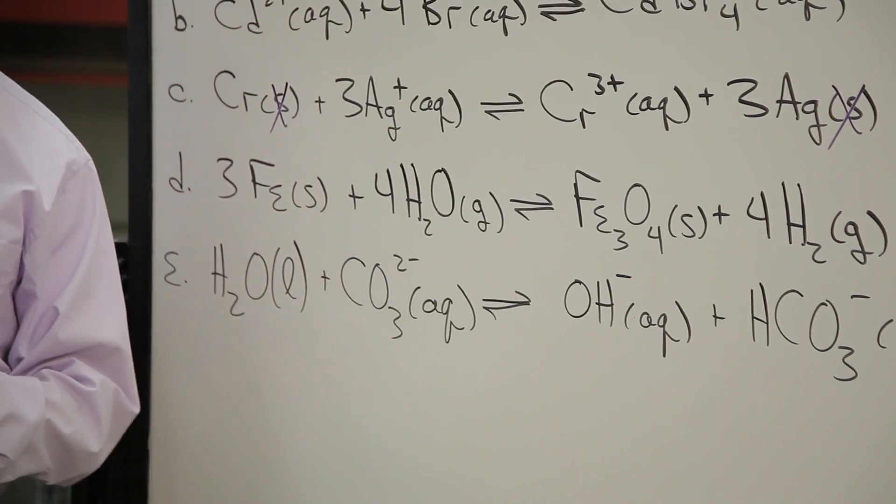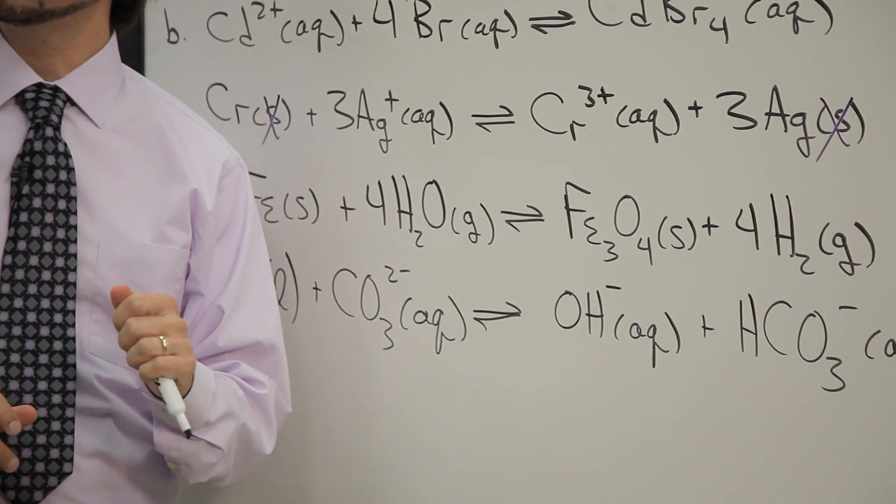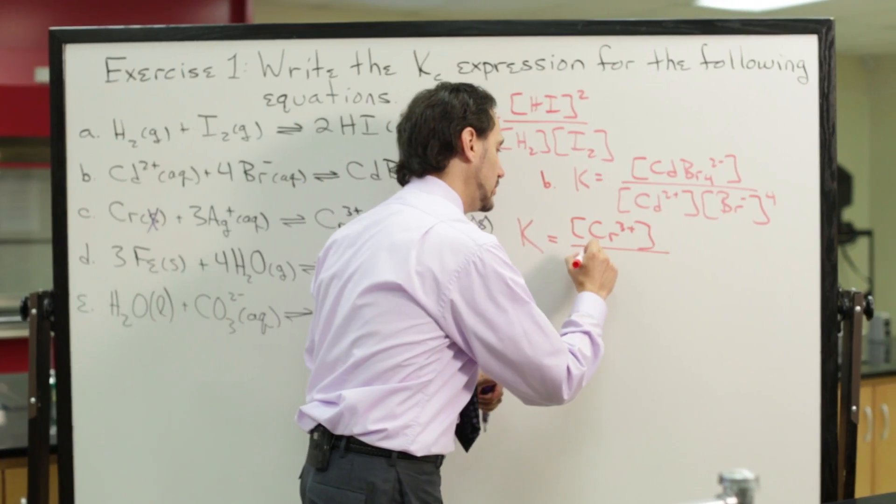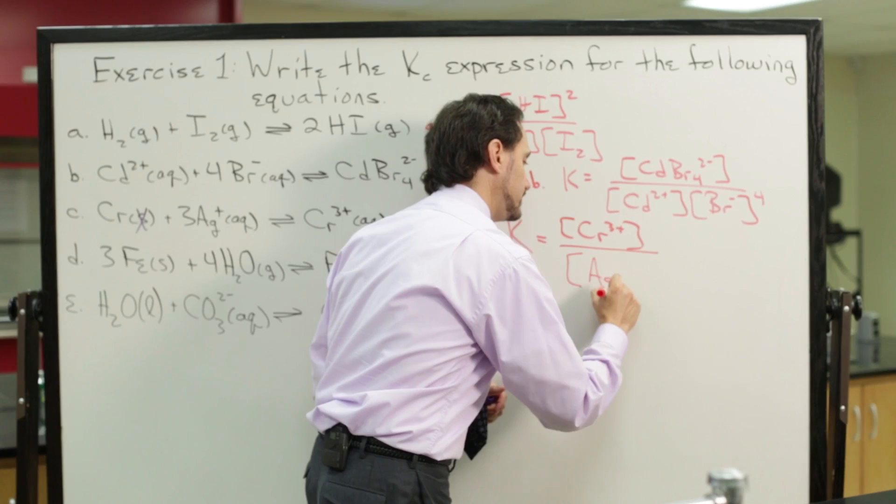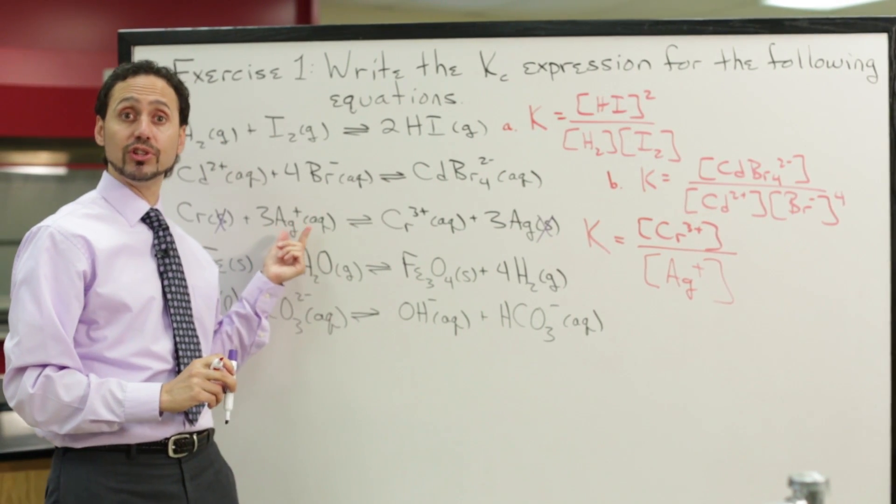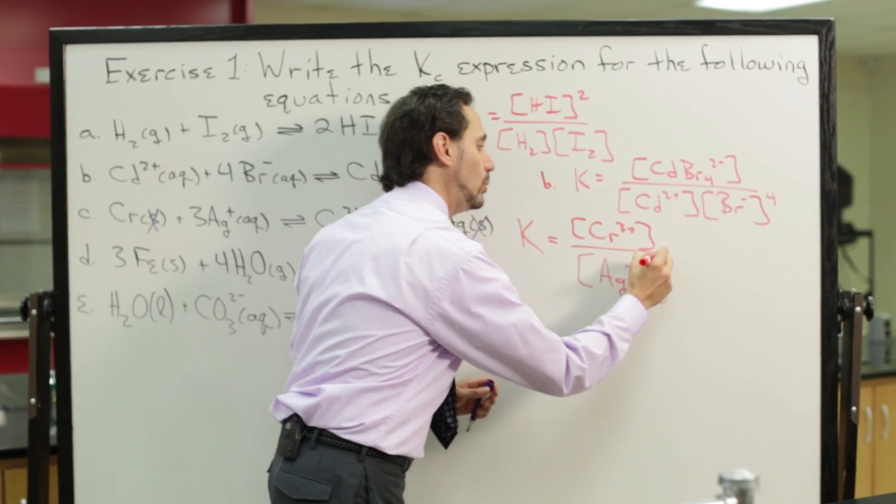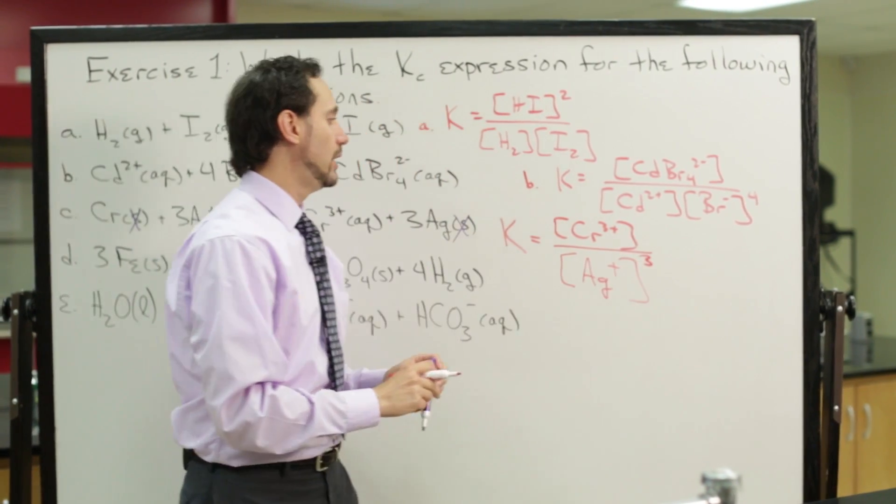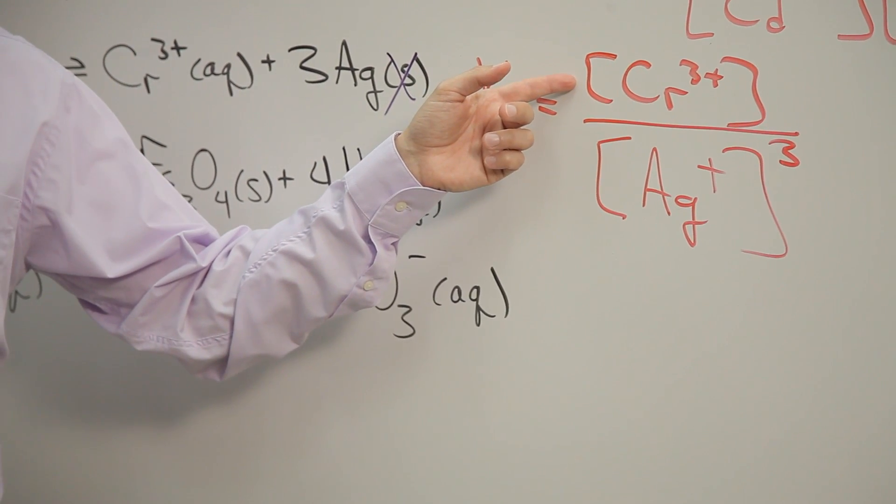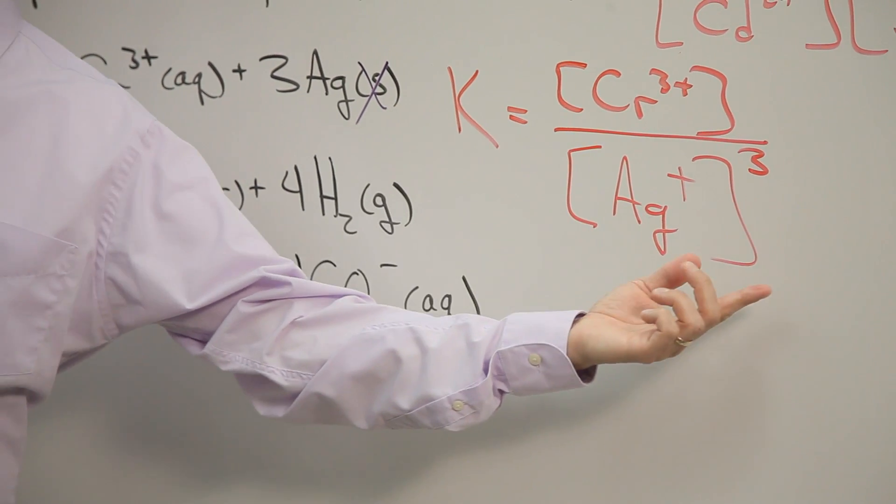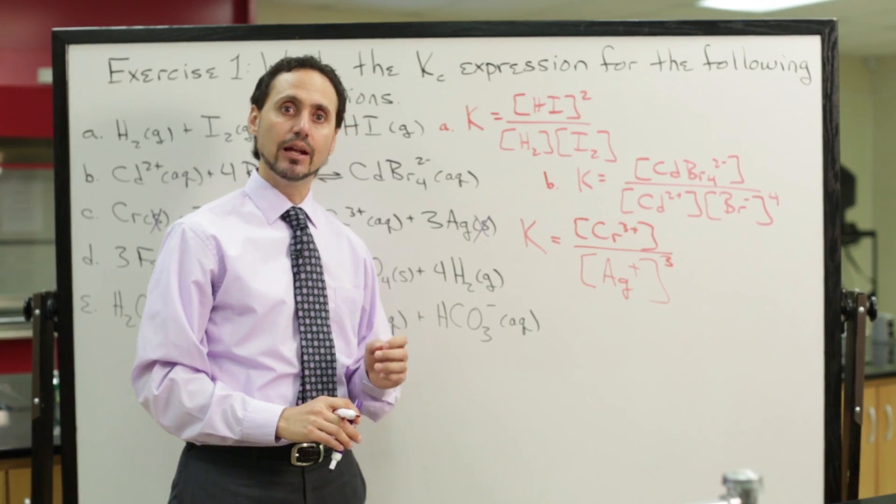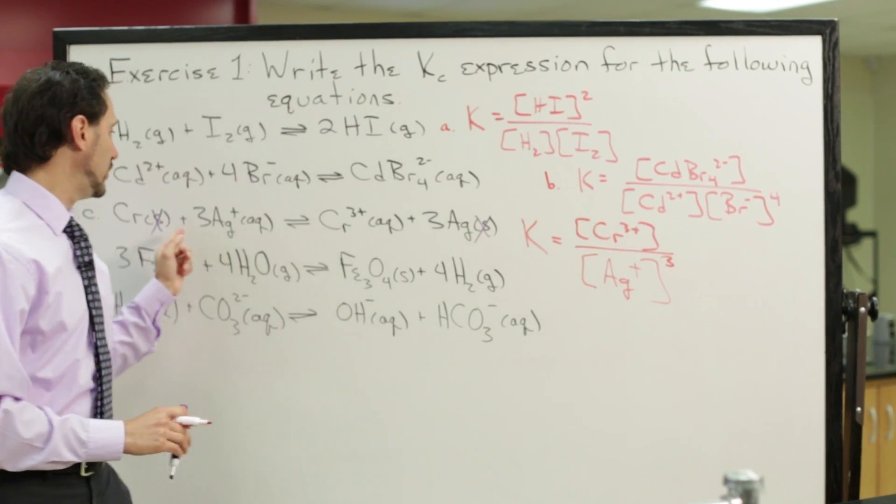Now let's look at the reactant side. We have solid chromium and aqueous silver ions. Again, because chromium is solid, we do not take that into account in the equilibrium constant expression. Silver ions are aqueous, so we do include those. And because we have three moles of silver ions, we raise that to the third power. So the equilibrium constant expression for this one is simply the chromium ion concentration divided by the cube of the silver ion concentration. Not too bad. Again, pay attention to those physical states.